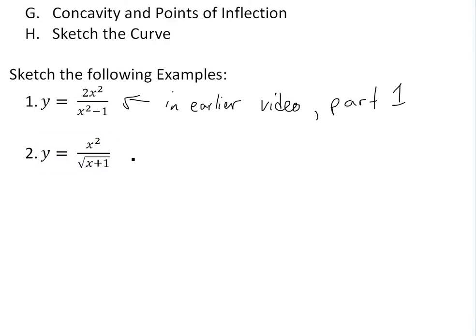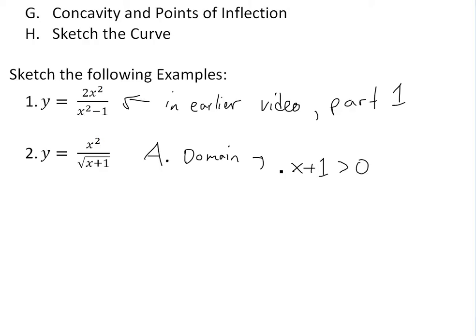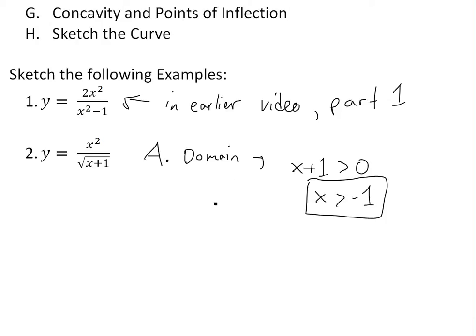y is equal to x squared divided by the square root of x plus one. First, part A is the domain. x is valid for all numbers except the denominator — x plus one has to be greater than zero, because you can't have a square root of a negative. So x plus one greater than zero means x is greater than negative one. The domain is all x greater than negative one.